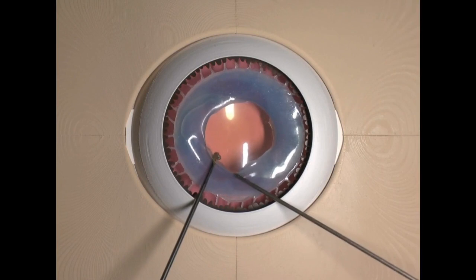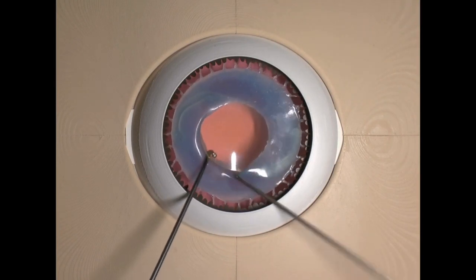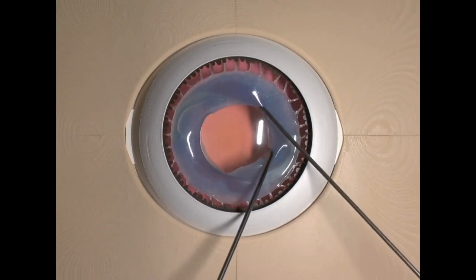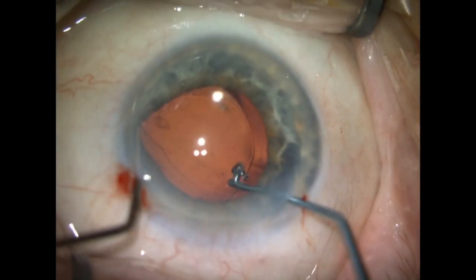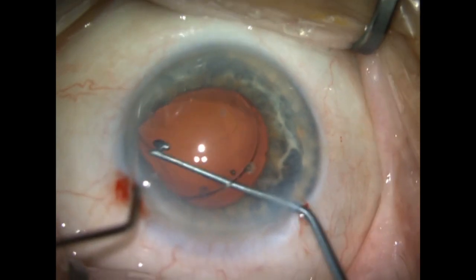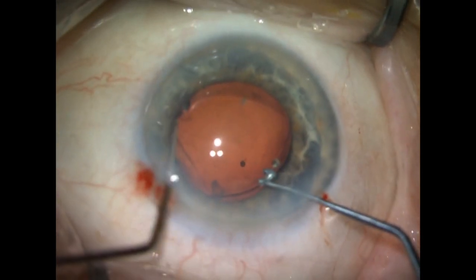If the damage to the posterior capsule, for example during implantation, does not allow for a stable implantation inside-back, we can perform reverse optic capture. The haptics are posterior to the anterior capsule and the optic is prolapsed anteriorly through anterior capsulotomy.